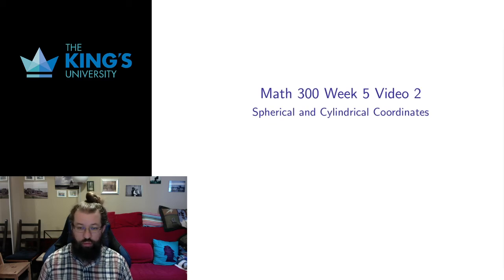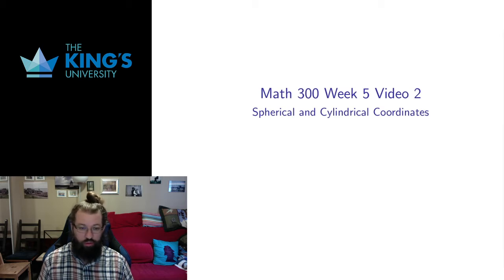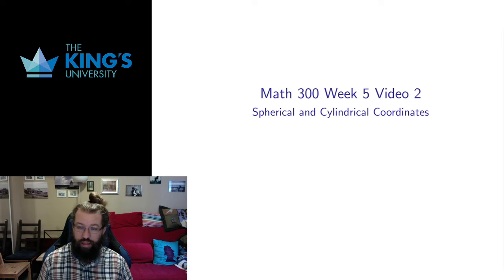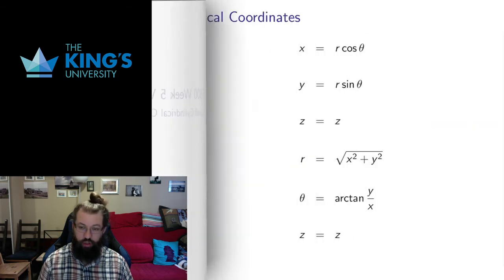Welcome to video 2 for week 5 for Math 300. In the previous video we introduced polar coordinates, which were a type of nonlinear coordinate in R2. Here we want to introduce two types of nonlinear coordinates in three dimensions. These are going to be spherical and cylindrical coordinates, and they follow the same pattern as polar coordinates in R2, using angles and radii instead of the conventional axes of Cartesian coordinates.